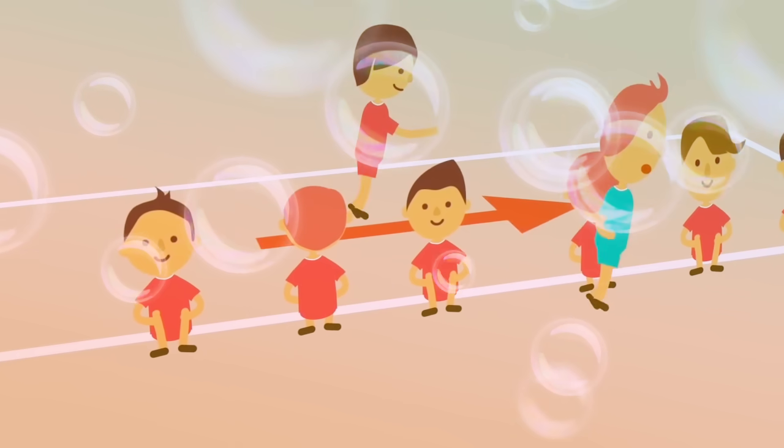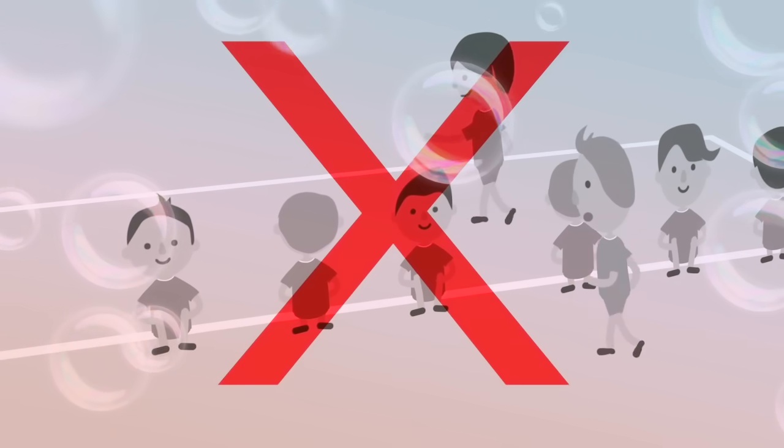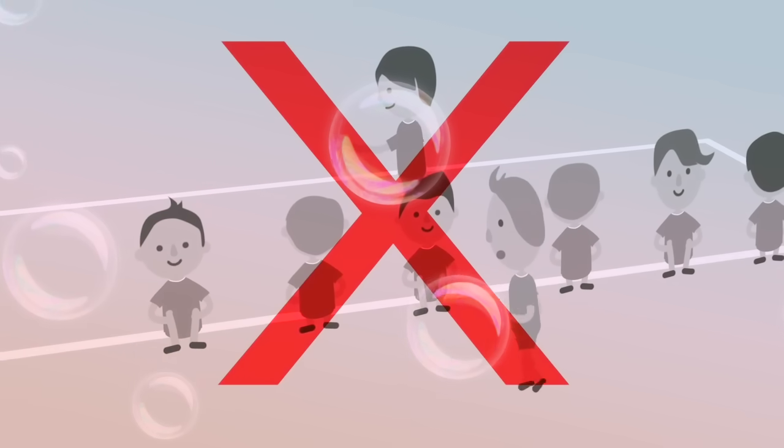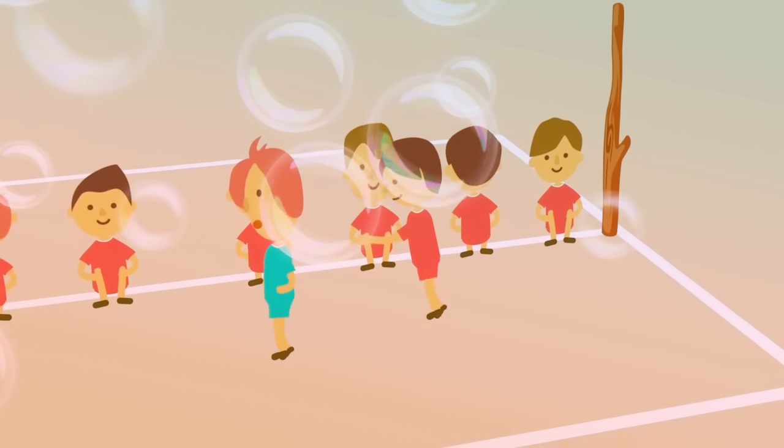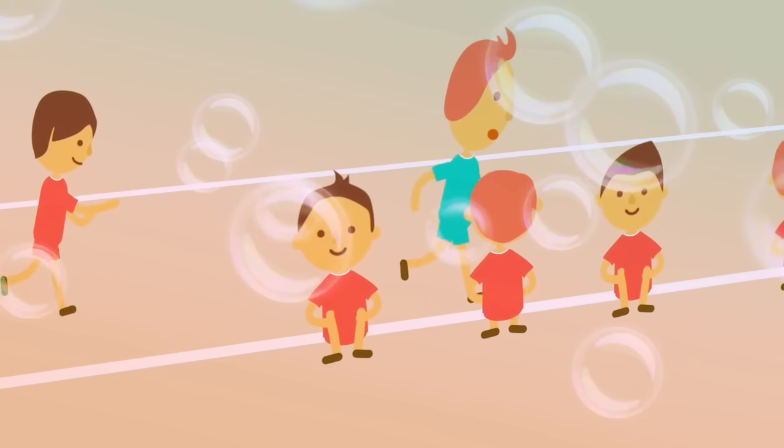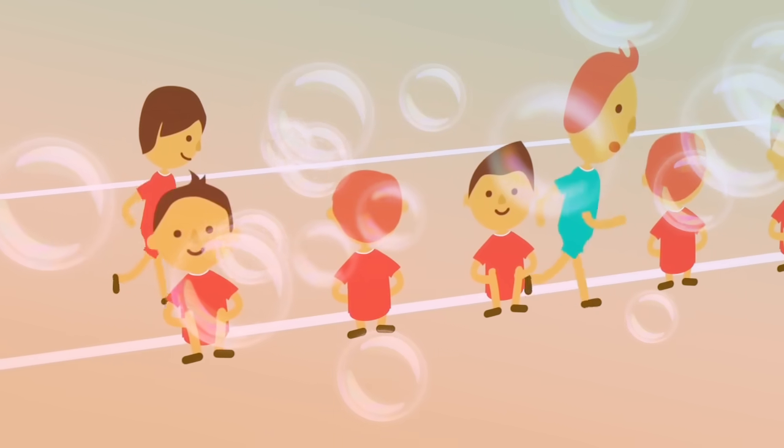Once he has started running, he cannot turn around. In order for him to change directions, he must run to a pole and around it.